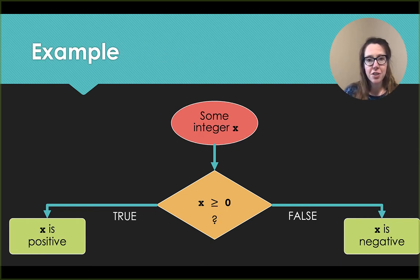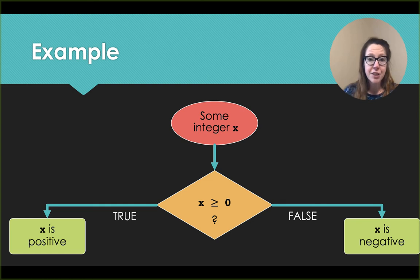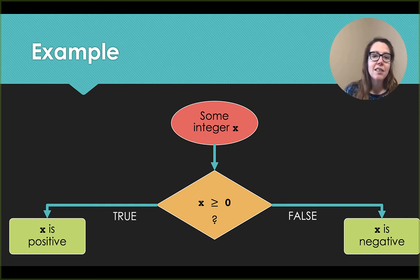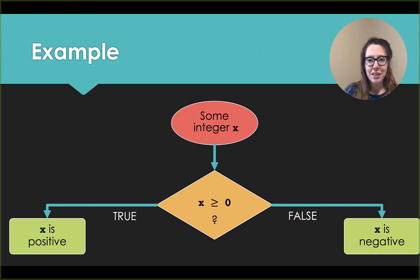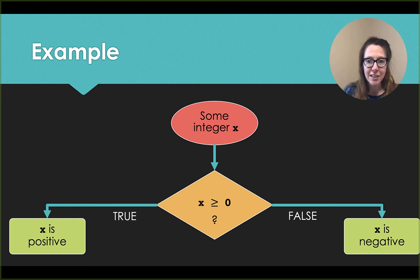For example, if we have some integer x, we can decide if x is greater than or equal to 0. If it's greater than or equal to 0 — say the number 1 — we follow the true branch and return that x is positive. If it's not greater than or equal to 0, for instance if x were negative 1, we follow the false branch and find out that x is negative.